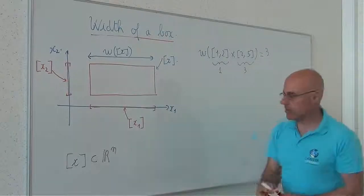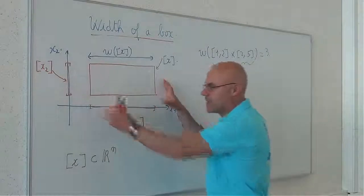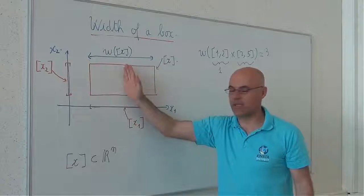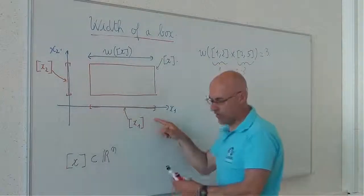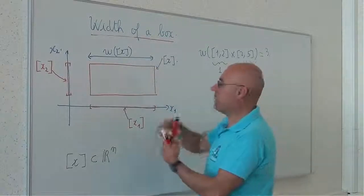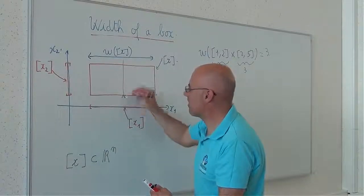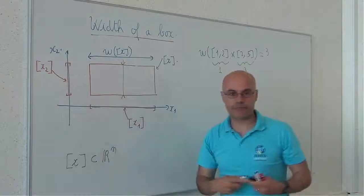This will be important when in interval algorithms, when I will have to bisect the boxes. I will, most of the time, bisect the boxes with respect to the largest interval component. For instance, in this situation, if I want to bisect this box, I will bisect it like this to generate two boxes.